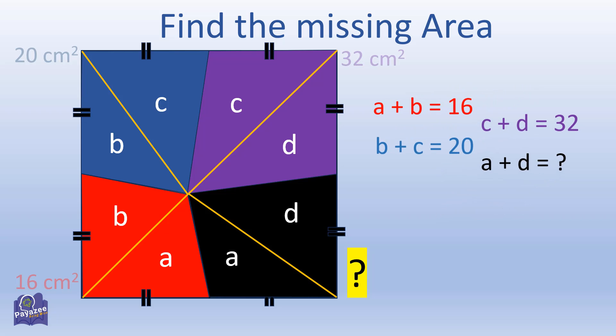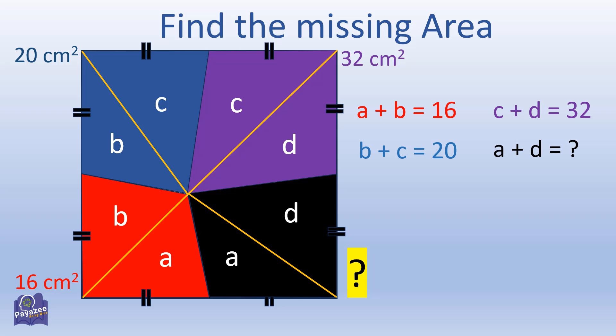Now notice that red area is equal to purple area and the blue area is equal to black area. That is A plus B plus C plus D equals B plus C plus A plus D. The sum of opposite areas is equal. We have a value for the three areas and we can find the fourth area by placing the value against each. So 16 plus 32 equals 20 plus A plus D. Moving 20 on the left side gives us A plus D equals 28.